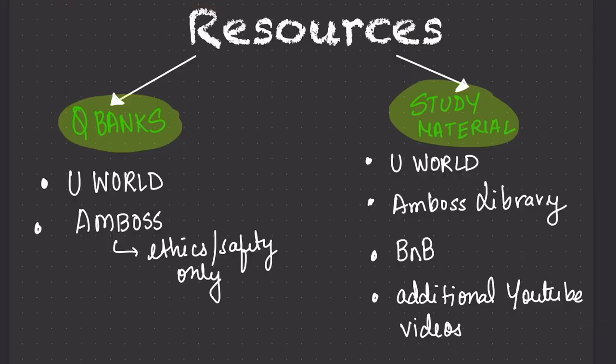Summarizing the resources: divide them into Qbanks and study material. Your main Qbanks will be UWorld and AMBOSS — AMBOSS especially towards the end of your prep, not throughout. For study material, UWorld is the most important resource. Along with it, use the AMBOSS library for difficult topics you're repeatedly getting wrong, and also as an online reference bank. You can also use Boards and Beyond for Step 2 if you gave Step 1 a while back — it's a very good refresher — plus additional YouTube videos I'll explain later.